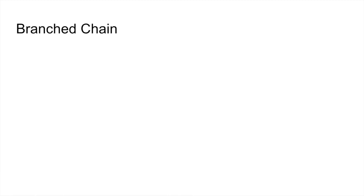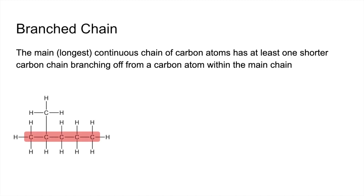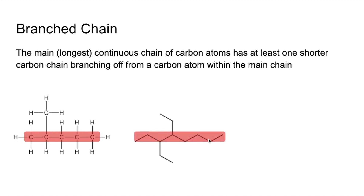Branched chain now — the main or longest continuous chain of carbons has at least one shorter carbon chain branching off from a carbon atom within the main chain. So the first one I'll show you has a main continuous chain that is five carbons long, and then off the second carbon in the main chain, we've got a carbon branch coming off here — so this is a branched chain. There's another example: again, we've got the longest continuous carbon chain, and then a branch coming off that carbon, and another branch coming off that carbon.